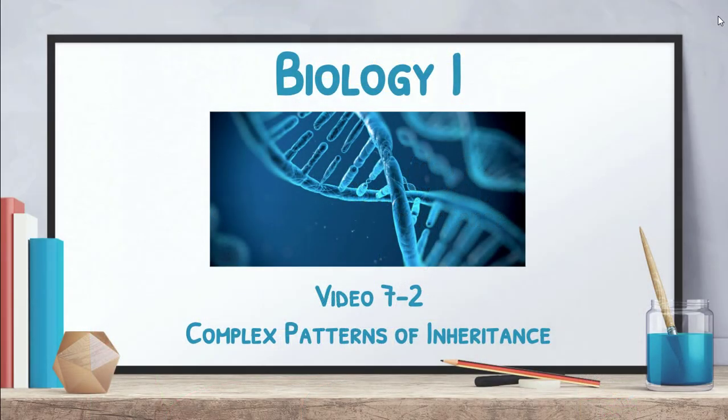Welcome back folks, JLanBio here talking about some complex patterns of inheritance. Not everything is inherited the way we talked about in our last video. There are lots of different ways that characteristics and traits are inherited from parents to offspring. We're going to talk about three specific ways today and be able to perform three new types of Punnett squares: incompletely dominant traits, co-dominant traits, and sex or X-linked traits.